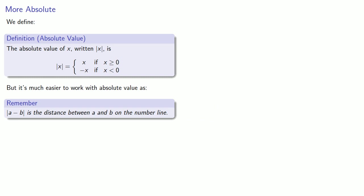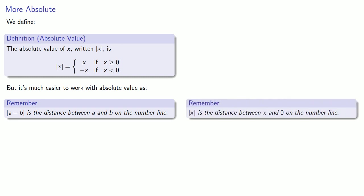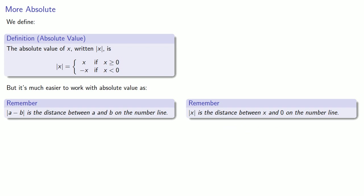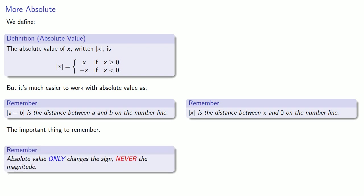Now, if b is 0, then since a minus 0 is just a, this leads to a related idea: the absolute value of x is the distance between x and 0 on the number line. The important thing to remember here is that absolute value only changes the sign, never the magnitude.